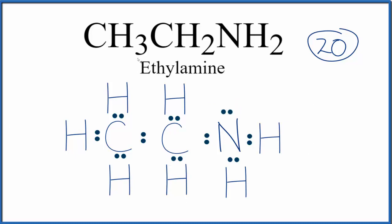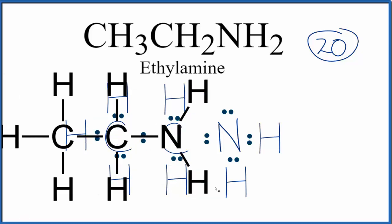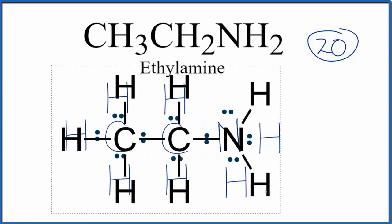And this is the Lewis structure for CH3, CH2, NH2, ethylamine. You could replace all of the pairs of electrons to show single bonds. So sometimes you'll see it written like this here. We still have a lone pair on the nitrogen.